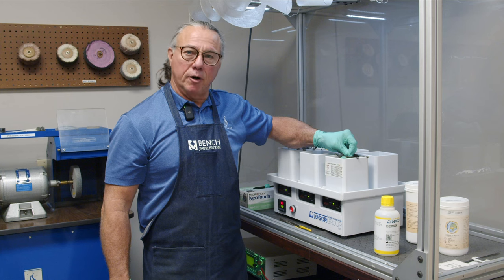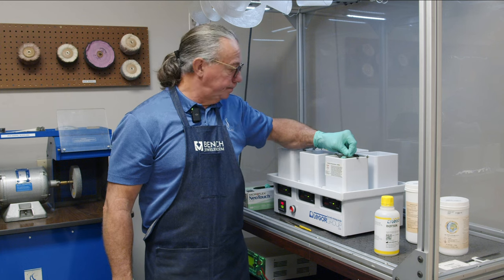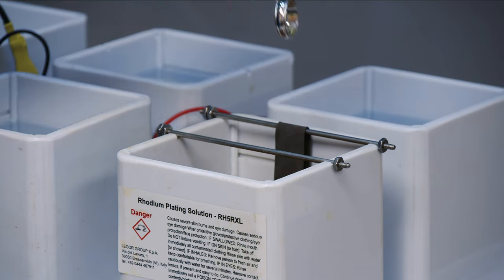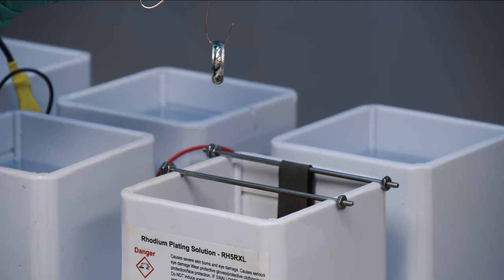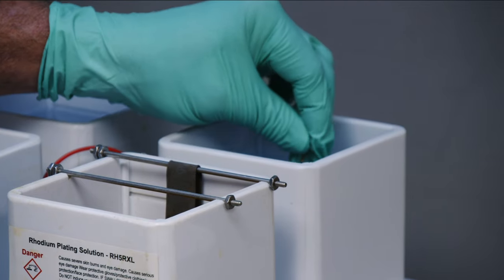And so we're going to leave it in here for about 30 seconds. And that should be good. Now we have a white gold ring that has been rhodium plated. And we'll go into our final rinse.